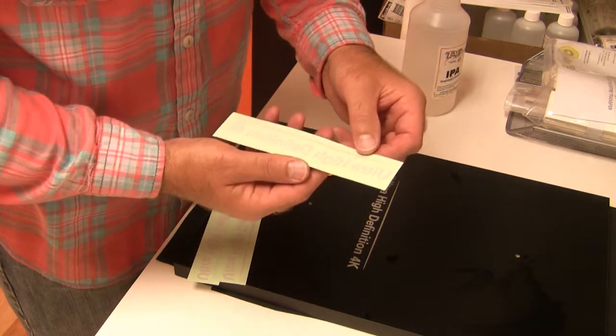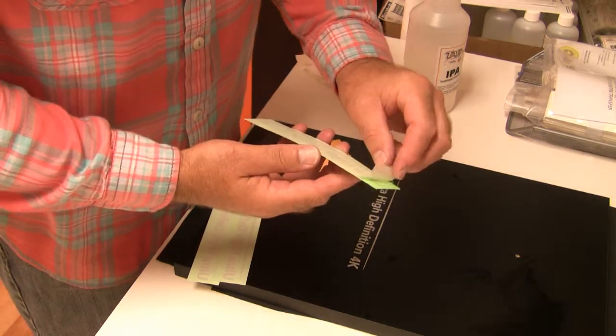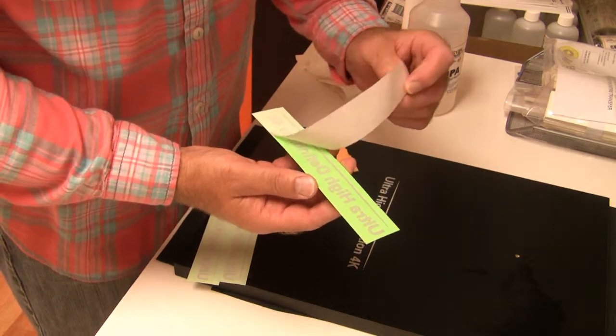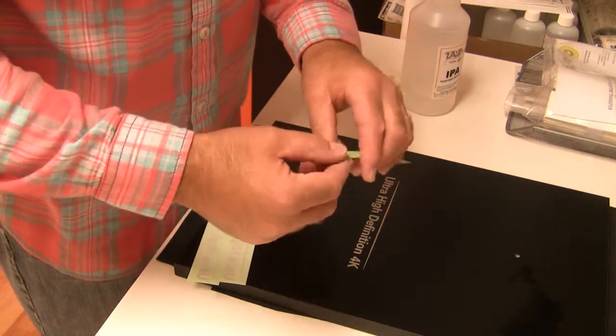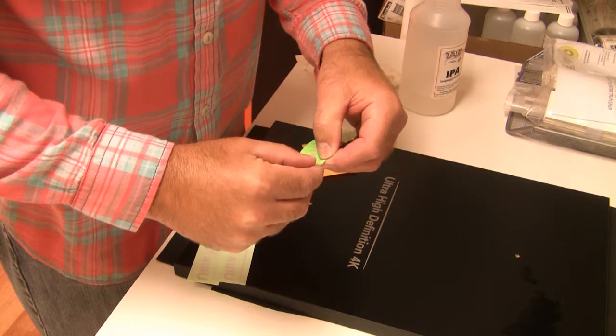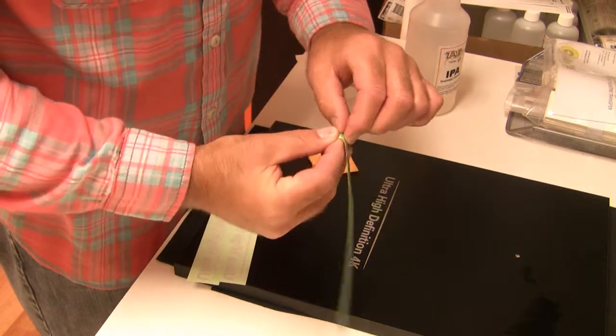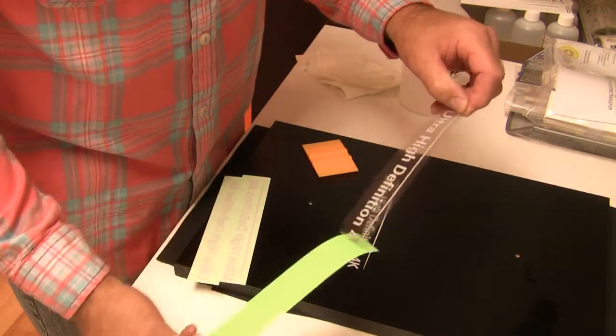Okay, the next thing we're going to do is take our DryTag transfer. We're going to remove the release liner. That's the milky white layer. Then we're going to peel and separate the green backer paper from the clear carrier.